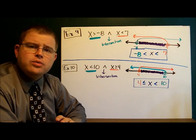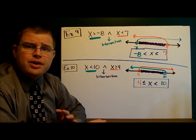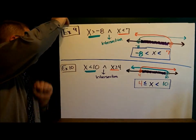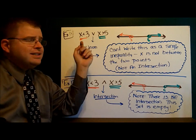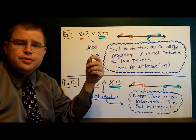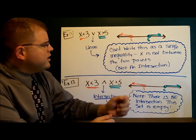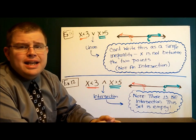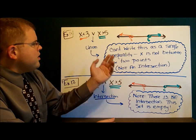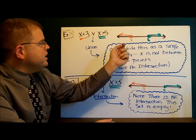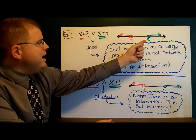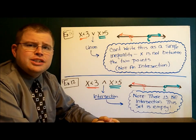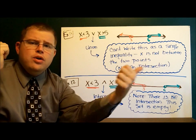Now it's important to know that you can only use this compact format when you have an intersection. If you have a union, it doesn't work. We have the union: x is less than 3 and x is greater than 5. We shade the number line in the appropriate places, and x is not in between anything. So we can't write x in between the two numbers. We simply have x is less than 3, or x is greater than 5. It's not an intersection — x just happens to be either over here or over there.